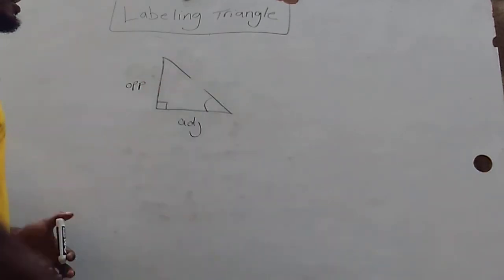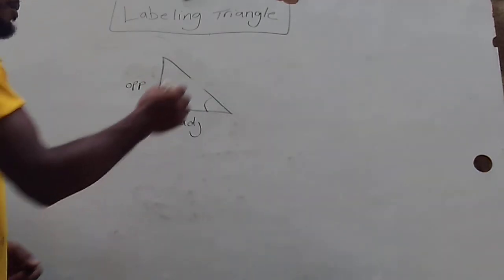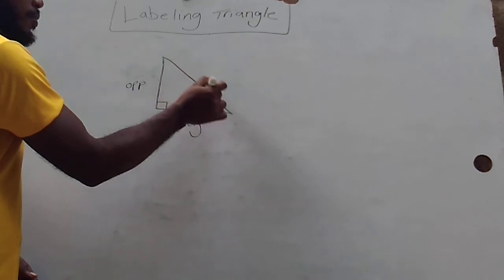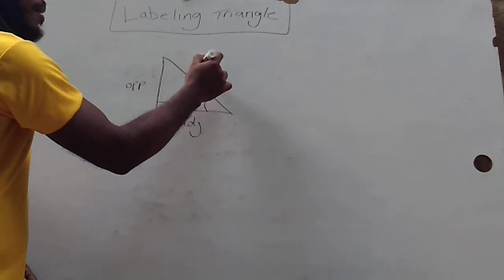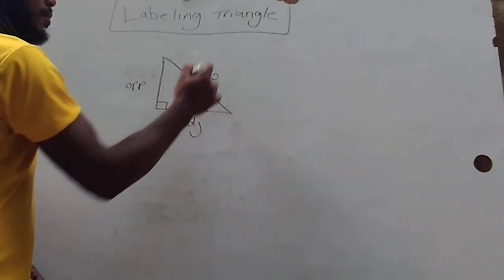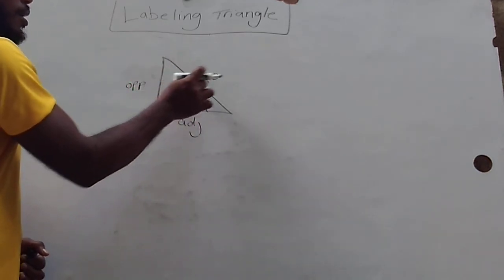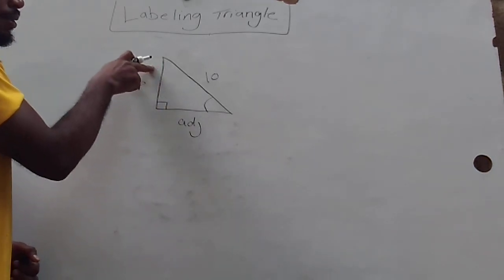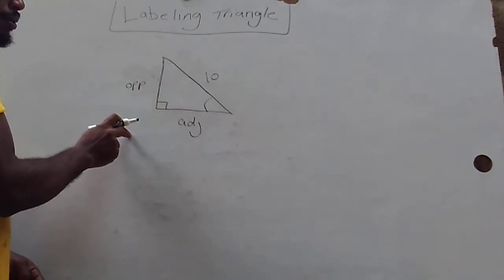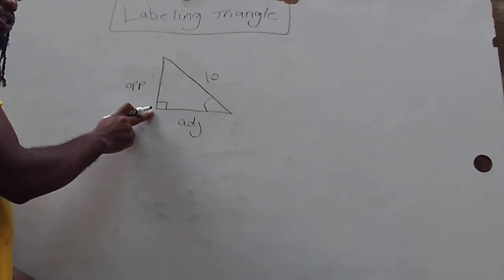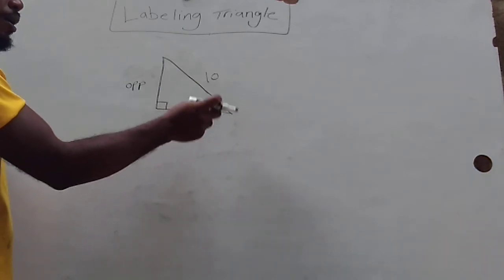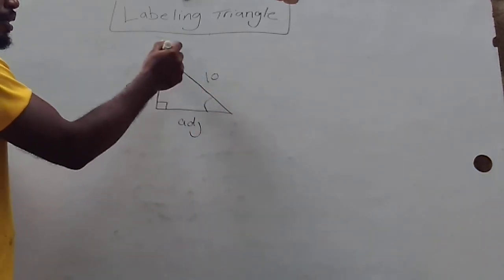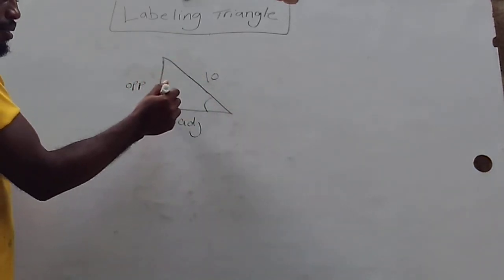As I said, the largest side is normally opposite to the larger angle. So with the hypotenuse being 10, none of these sides can be greater than 10 because the largest angle is the right angle, and both of these angles are less than the right angle.